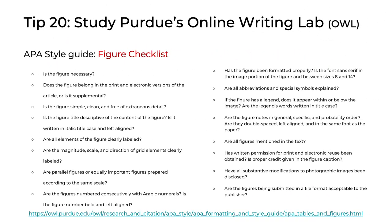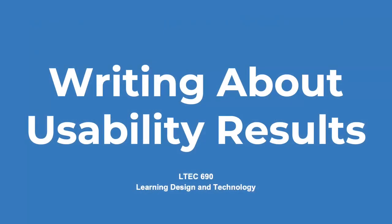Tip 20: Use the figure checklist available on Purdue's Online Writing Lab. Just like the table checklist, this one provides lots of guidance on how to format your figures properly so that they align with APA style. So there you have it — 20 tips on writing about usability results. Thanks for watching.